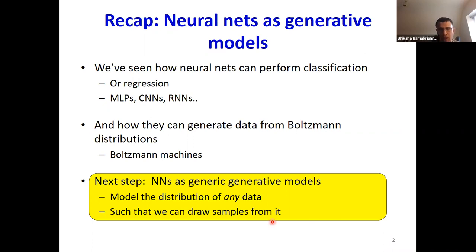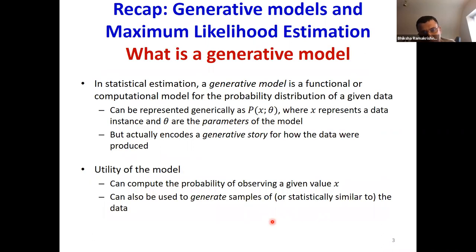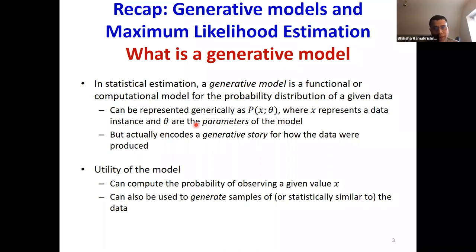In the last class, we defined what a generative model was. In statistical estimation, a generative model is a functional or computational model for the probability distribution of a given data. It's a model — it has parameters. You can represent it generically as p(x; θ). This semicolon θ indicates that it has parameters θ, and sometimes we won't write it explicitly but it will be implicit.